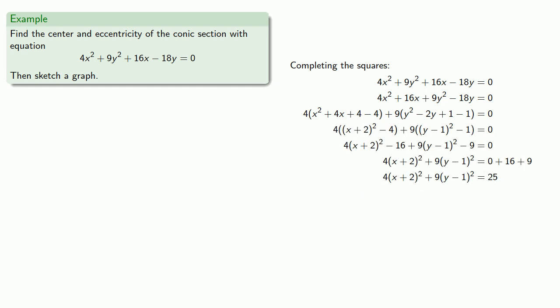Now, because our square terms are added, this is some sort of an ellipse. But in our ellipse, the constant term needs to be 1, so we'll divide both sides by 25.